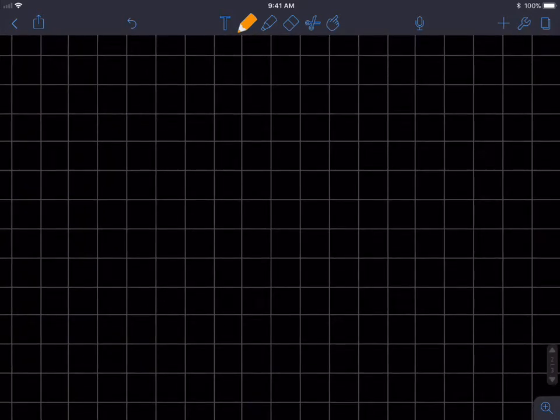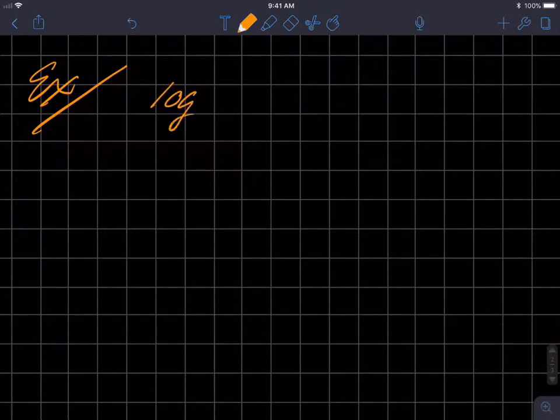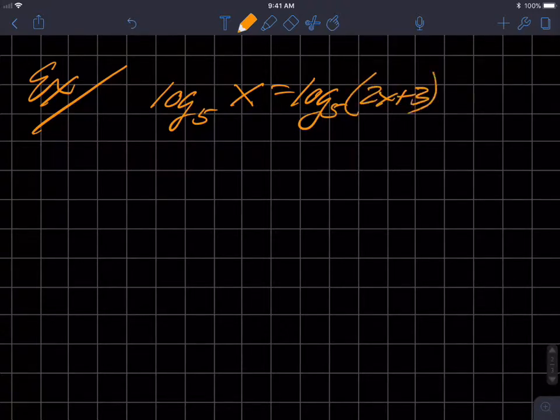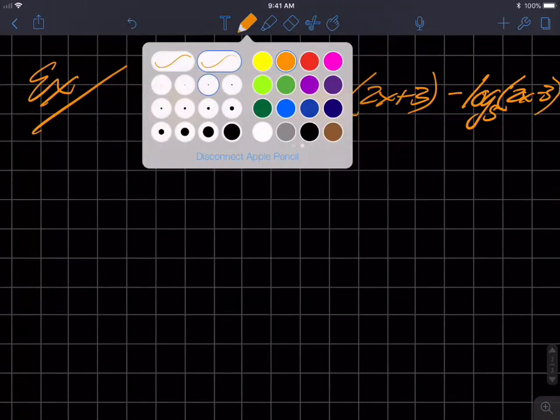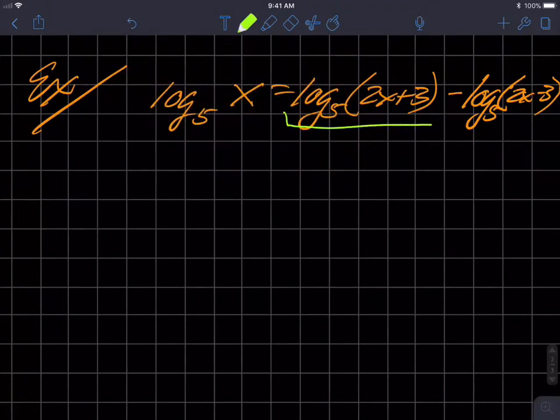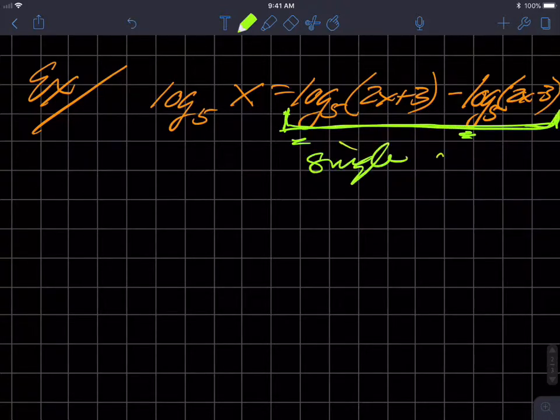So then we have another example. I didn't write example, so it kind of confused me there for a second. So log base 5 of x is equal to log base 5 of 2x plus 3 minus log base 5 of 2x minus 3. Now, we could do some crazy raise both sides to the 5, but there's a problem here. It's going to be significantly complicated because we have two terms on the right. And so we would have 5 raised to the whole thing. You can't raise these individually to 5. Cannot. So you would want to sort of find a way to join these and make them a single term.